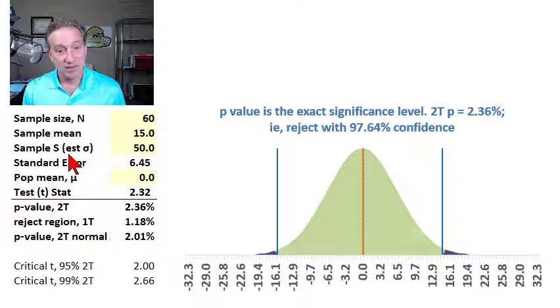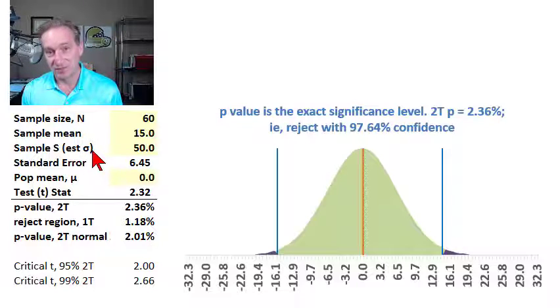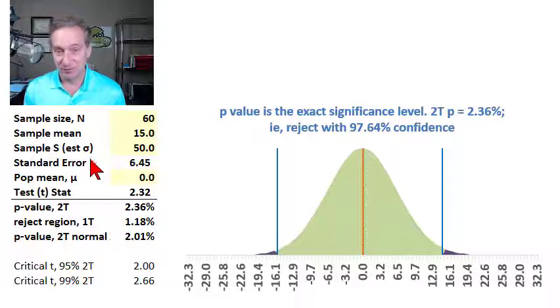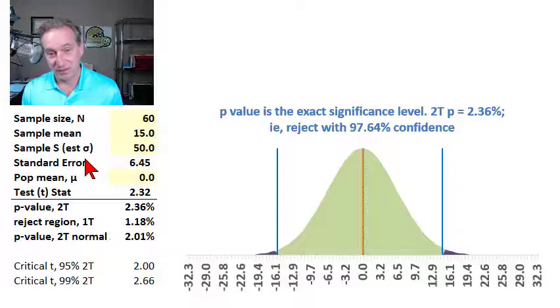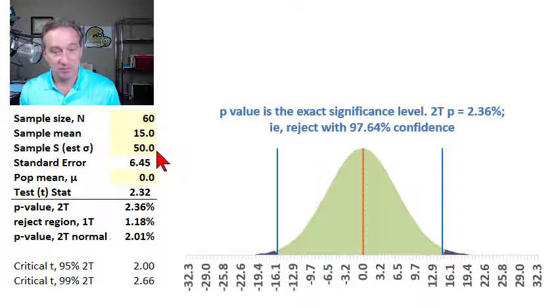We do need the sample standard deviation, so the sample standard deviation estimates what we don't know, which is the true population's standard deviation or volatility. That sample standard deviation, denoted capital S typically, let's say it's 50 basis points.